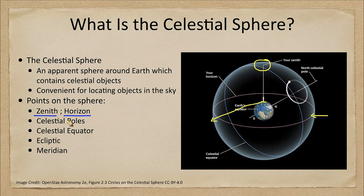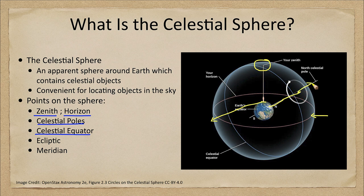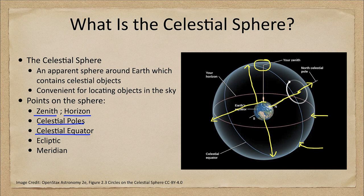We also have the poles and the equator, which are related to similar objects on Earth. The north celestial pole is really just the extension of Earth's north pole out to the sky where it intersects — that would be the north celestial pole, and it happens to be close to the star Polaris. The celestial equator is the blue line here, which is just the Earth's equator stretched out to the sky. Much like Earth's equator, it divides the sphere into a northern and southern hemisphere.